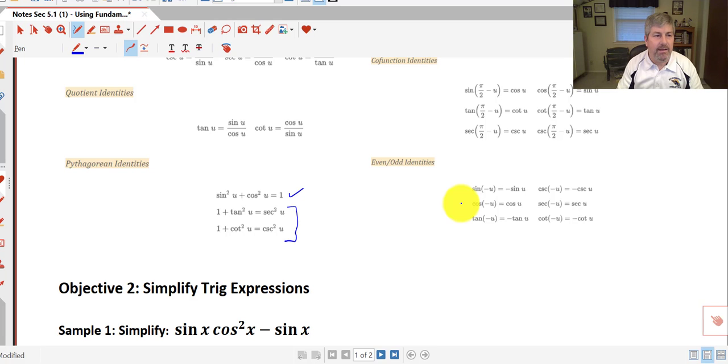so something to keep an eye on. And then finally, our even and odd identities. Again, we've seen these before, cosine and its reciprocal are even functions, and sine and tangent and their reciprocals are odd functions, or odd identities.